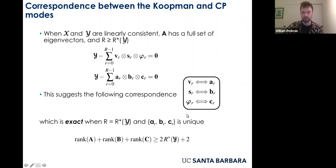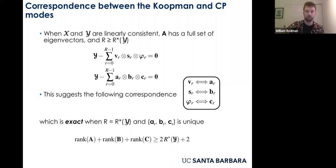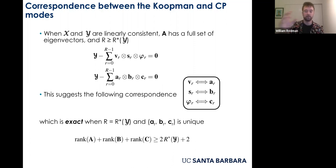This result looks very familiar to the CP decomposition equation. When X and Y are linearly consistent and A has a full set of eigenvalues, and the number of modes is greater than or equal to the tensor rank, we have a natural correspondence: Koopman modes correspond to the a's, their time evolution corresponds to the b's, and their dependence on initial conditions through eigenfunctions corresponds to the c's. This correspondence becomes exact equality when the number of modes equals the tensor rank and the decomposition is unique.